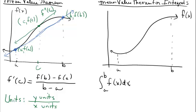This theorem guarantees that if we have a continuous function on a closed interval, there is one rectangle that has a width from a to b — a width of b minus a. There's at least one rectangle that, when filled in with this width and given some height, the area in that rectangle is the same as the value of this integral.